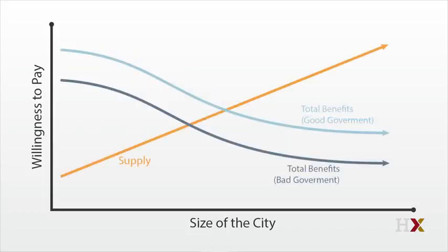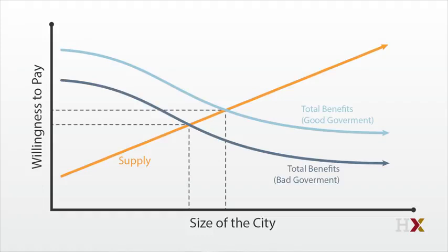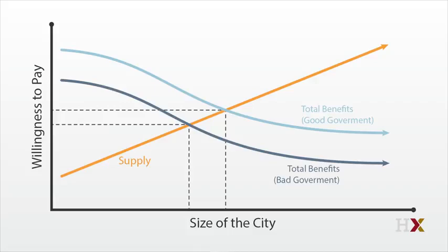We add in a supply of space in the city, and we see the impact of good government on city prices and city size. The better governed city has the higher demand curve — it strikes the supply curve further out, so that population is higher and prices are higher too. As city government improves, the city expands and its prices rise.